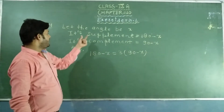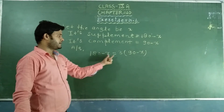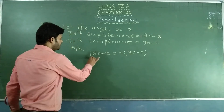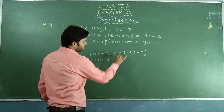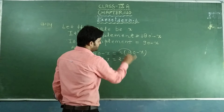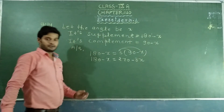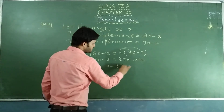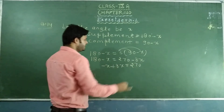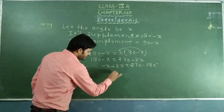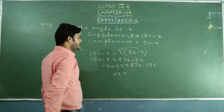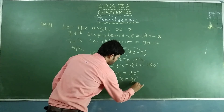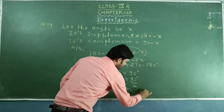180 minus x equals 3 times its complement, so 180 minus x equals 3 times (90 minus x), which gives 270 minus 150. Then 3x minus x equals 2x equals 90. So x equals 90 divided by 2, that is 45 degrees. That is the answer.